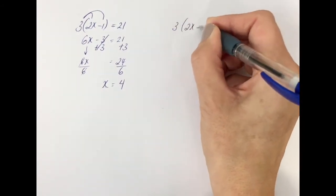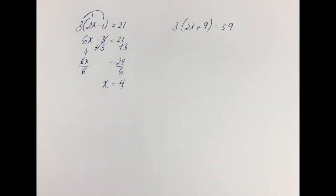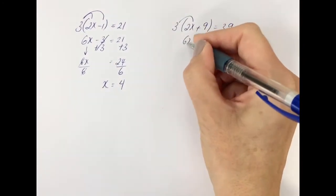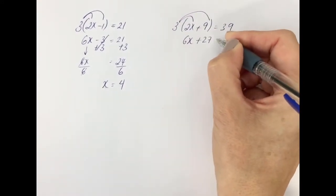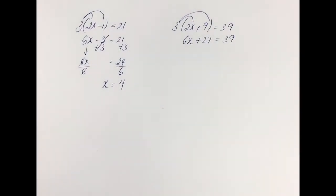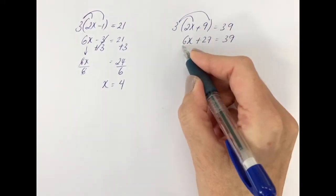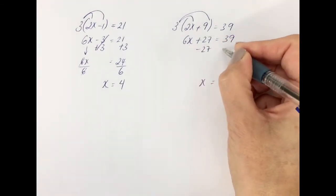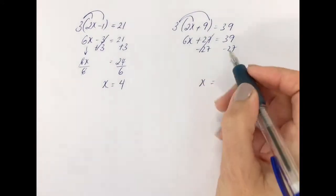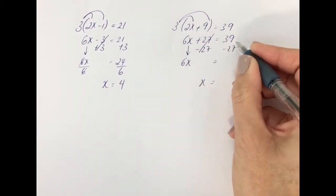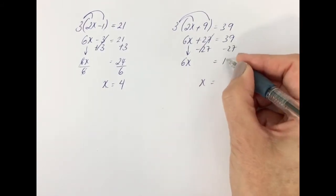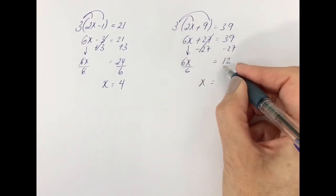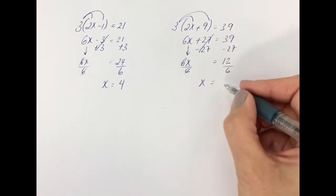Let's try 3 times bracket 2x plus 9 equals 39. Press pause if you feel confident to try this one on your own. 3 times 2x is 6x and 3 times 9 is a positive 27, equals 39. Multiply out the brackets and this is what we get. We want to get x on its own, so we've got to get rid of the plus 27 and the times by 6. To get rid of plus 27, we take it away from both sides. 6x remains, and 39 take away 27 is 12. Now divide by 6 on both sides: 6x divided by 6 is 1x, and 12 divided by 6 is 2.